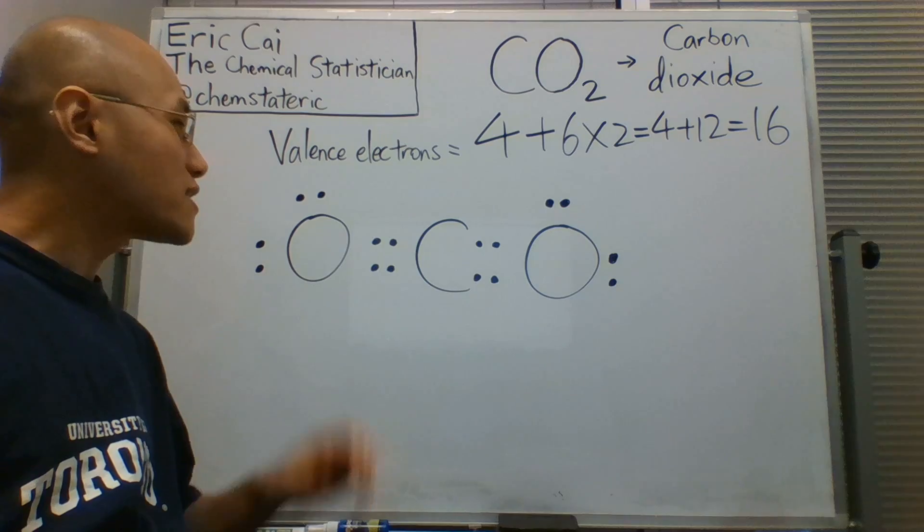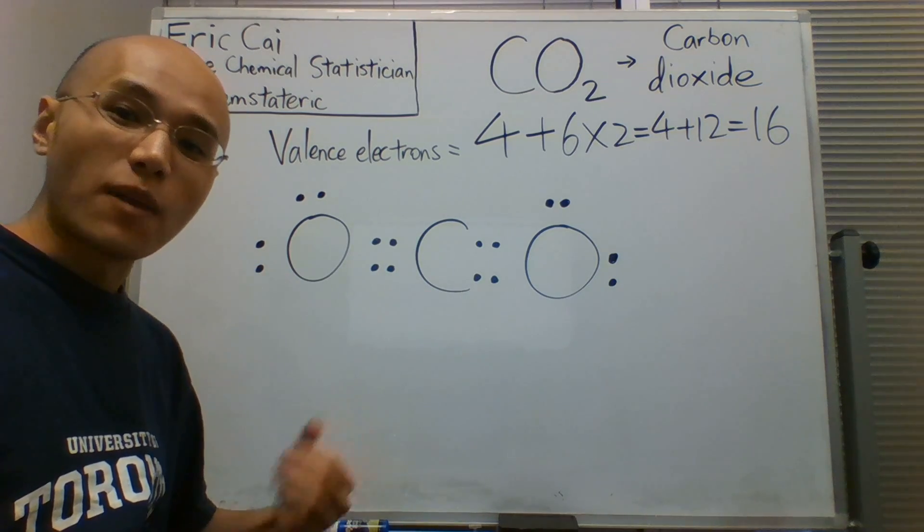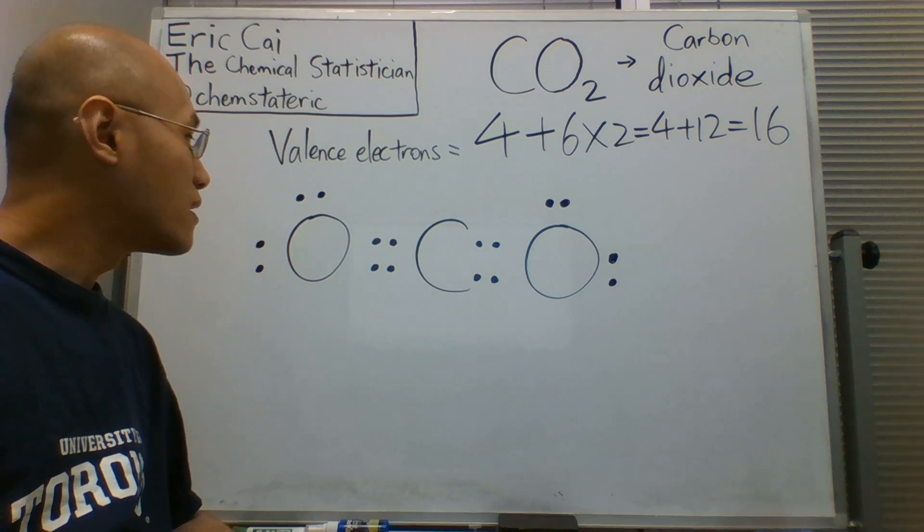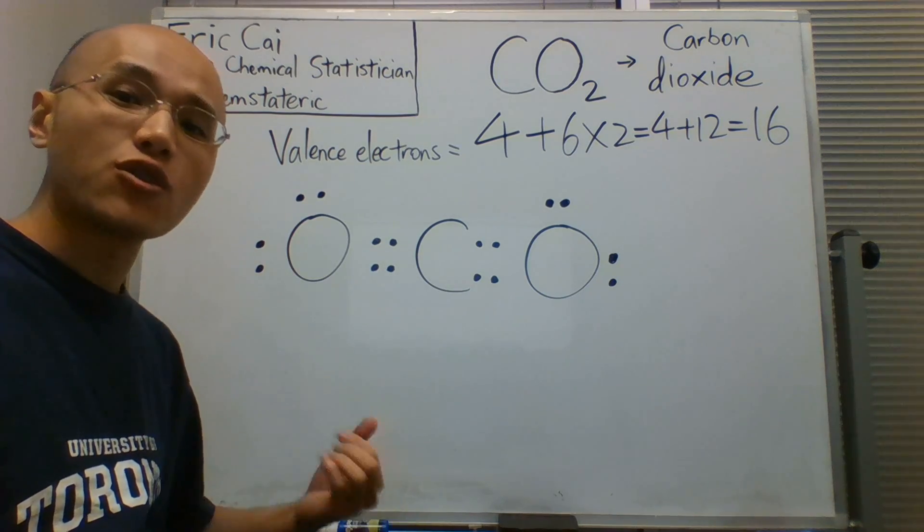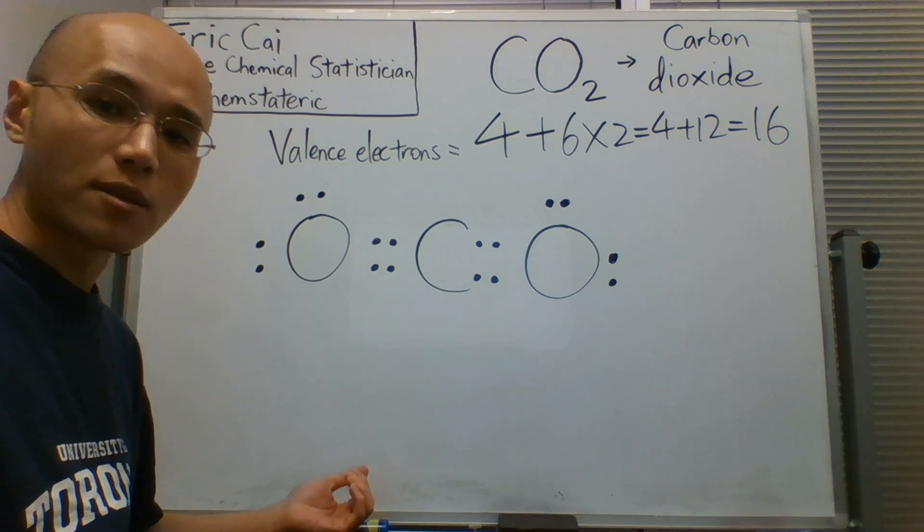So now, we have 16 electrons, and all three atoms have stable octets around them. So, as a final touch, it's a good idea to draw the electron domains as far apart from each other as possible.